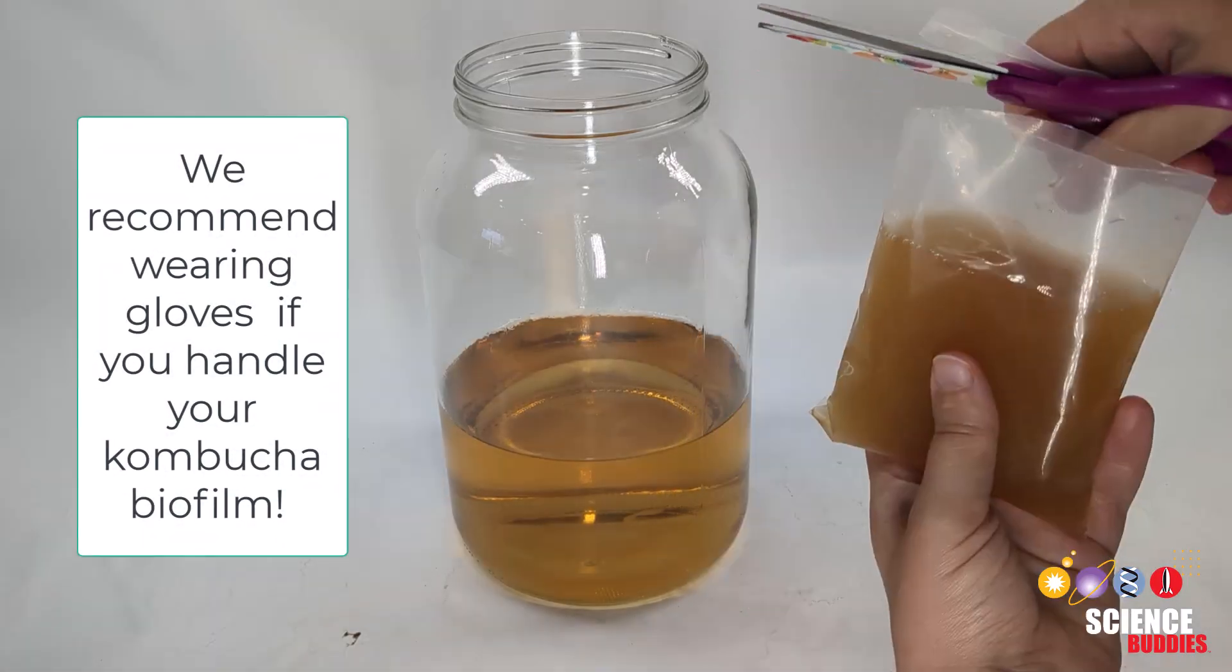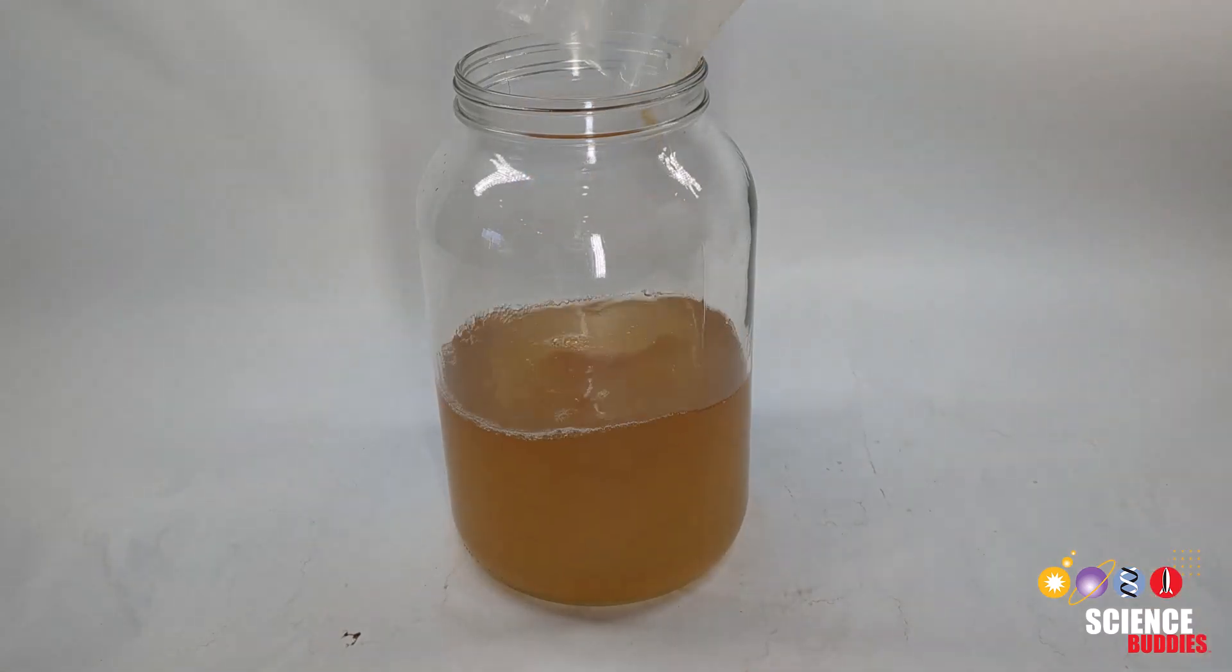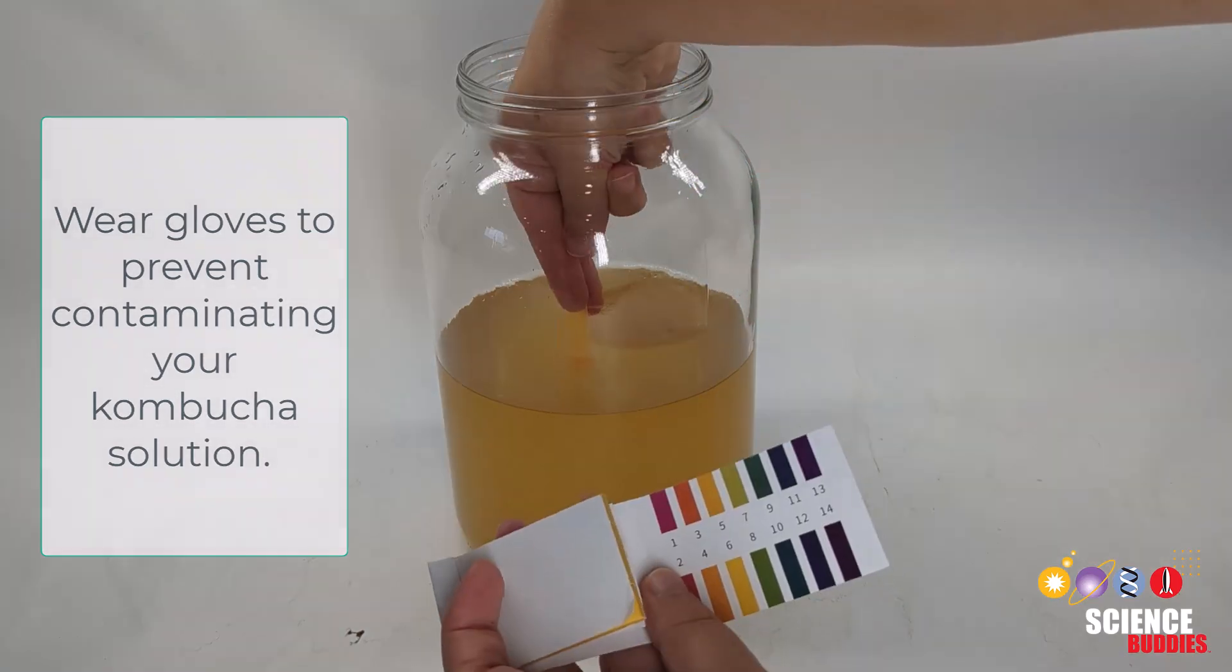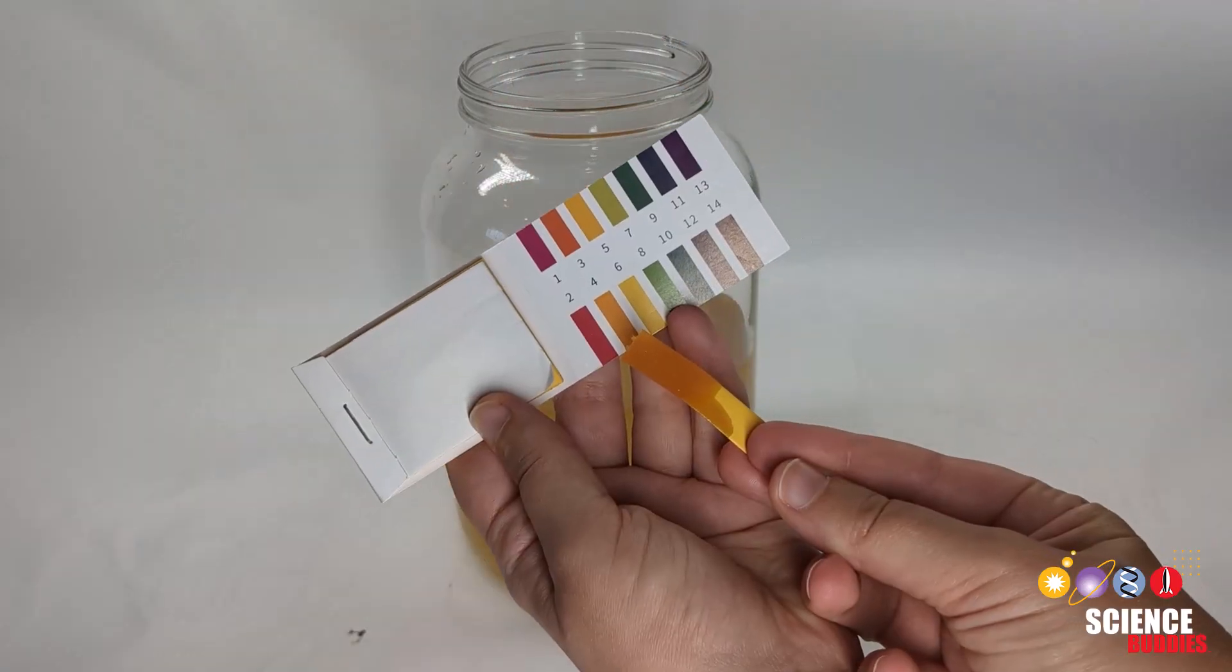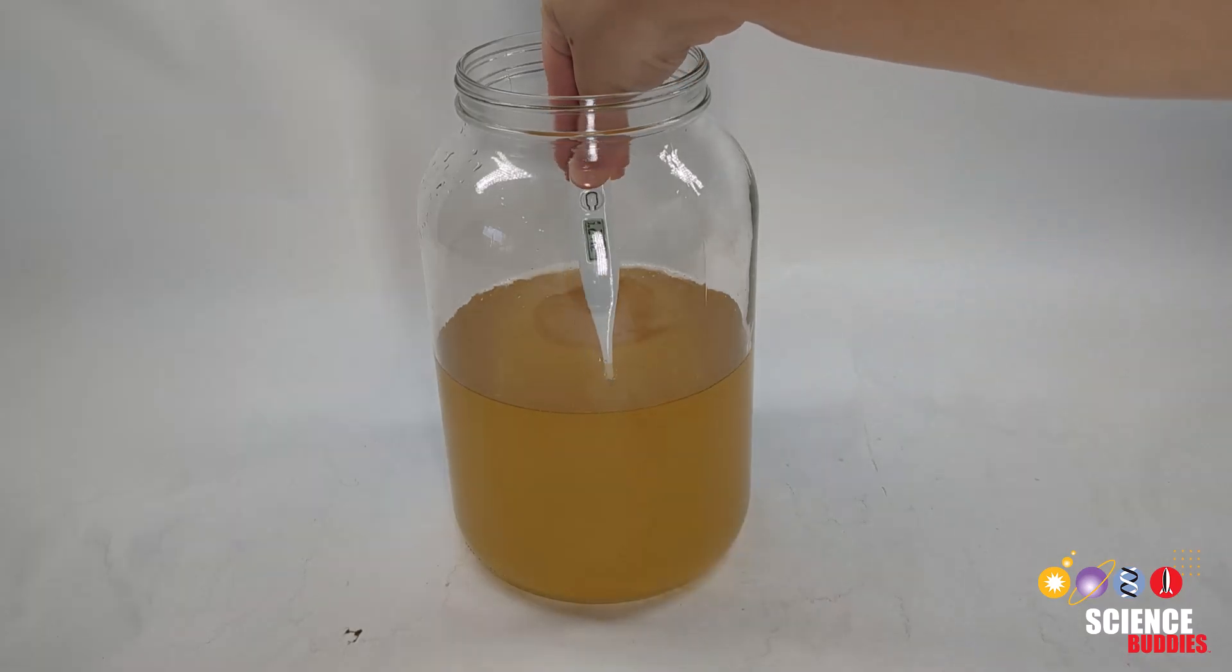Once the diluted tea is at room temperature, add the SCOBY biofilm and starter culture to the jar. Now that you've made your kombucha solution, you can measure the pH or acidity of the starting solution with pH paper. You can also measure the temperature of the solution.